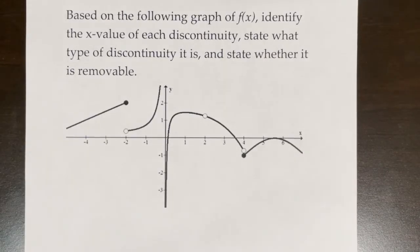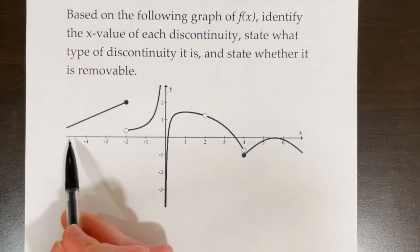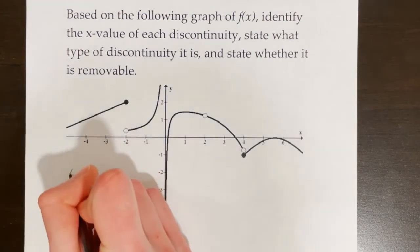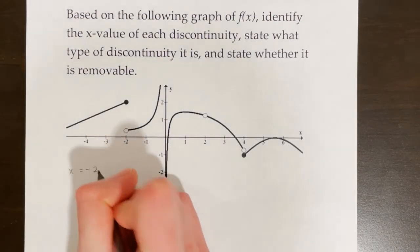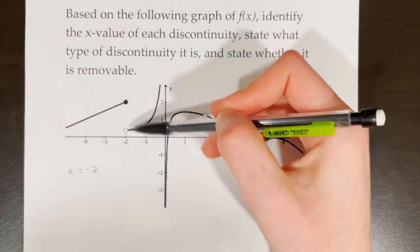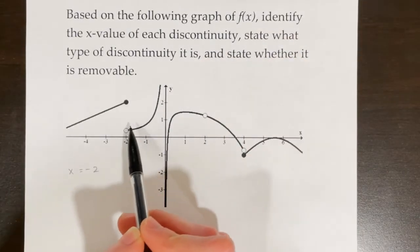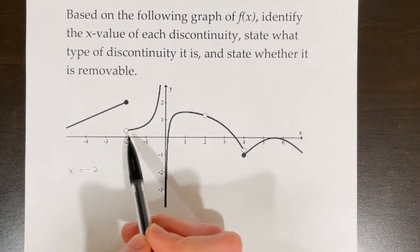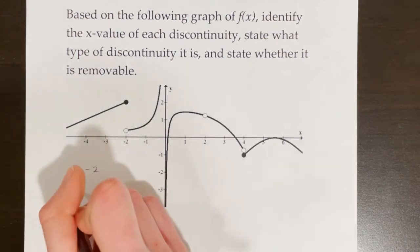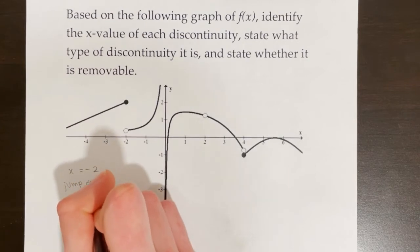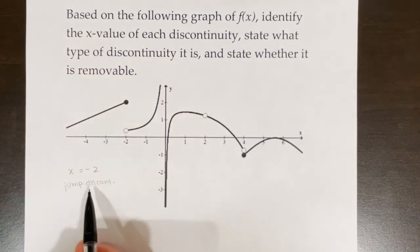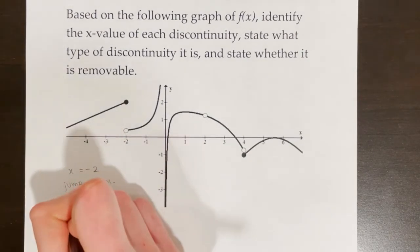Based on the following graph of f of x, identify the x value of each discontinuity, state what type it is, and state whether it is removable. Going left to right, the first discontinuity is at x equals negative 2. This is a jump discontinuity — two parts of the piecewise function come together but not at the same y value; one is at 2 and one is down around one third. Jump discontinuities are non-removable.